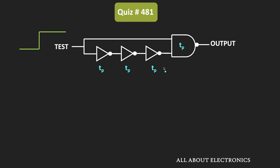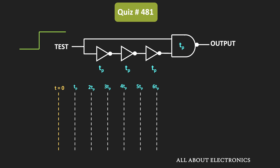Because of that delay, we will see a change in the output of this NAND gate. To find out how the output changes, let us look at the timing diagram. Initially, the stage signal is low, and at time t=0, it becomes high and remains as it is.